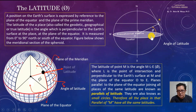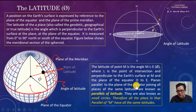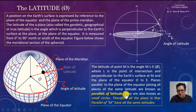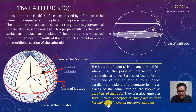All the latitude here is zero because this is the equator. Planes parallel to the plane of the equator joining all the places of the same latitude are also known as parallels of latitude. They are also known as small circles. Therefore, all the places in that parallel of M have all the same latitude.